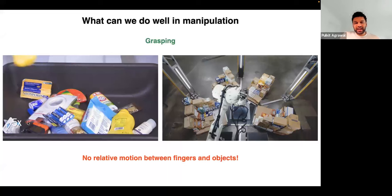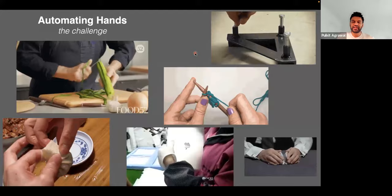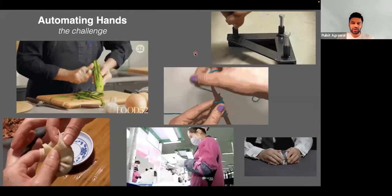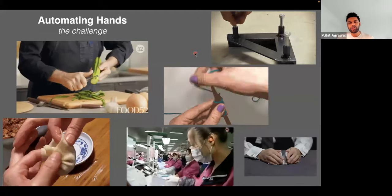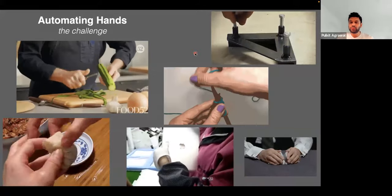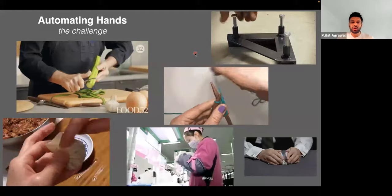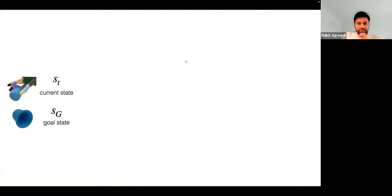One thing you notice in grasping is there's no relative motion between the finger and the object — once you pick up an object it has no motion with respect to your hand. Contrast this with tasks like peeling a cucumber, putting in screws, or inspecting laptops — in all of these there is motion happening between the object and the finger. This is a key characteristic required for tool use. Today we know how to pick up objects in unstructured settings, but we don't know how to use those objects as tools.